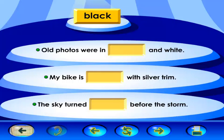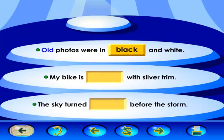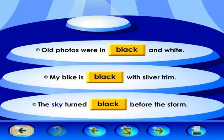Here's the fabulous word black. Look at the word and say it out loud with me. Black. Use the word black to complete these sentences. My bike is black with silver trim. The sky turned black before the storm.